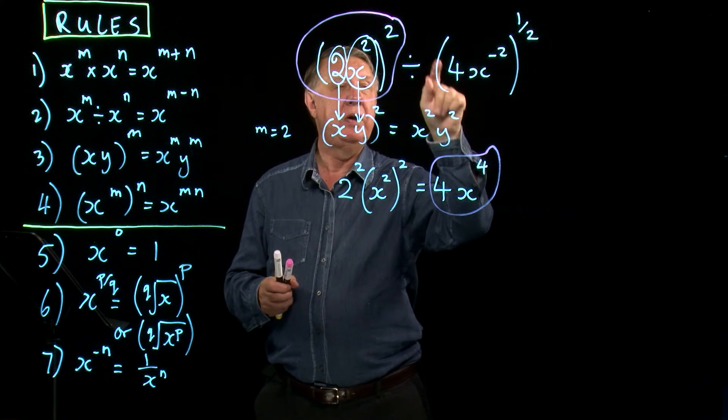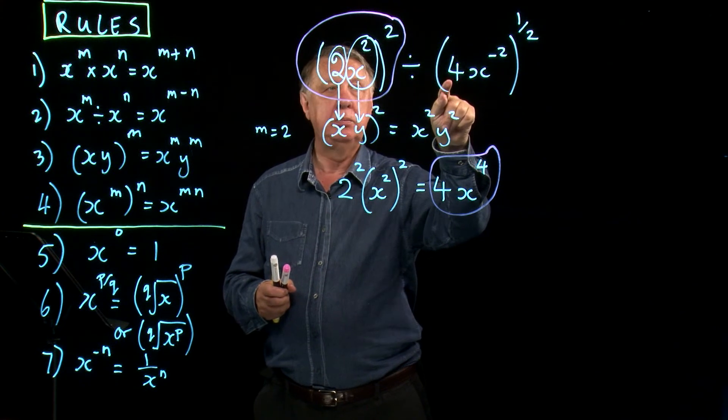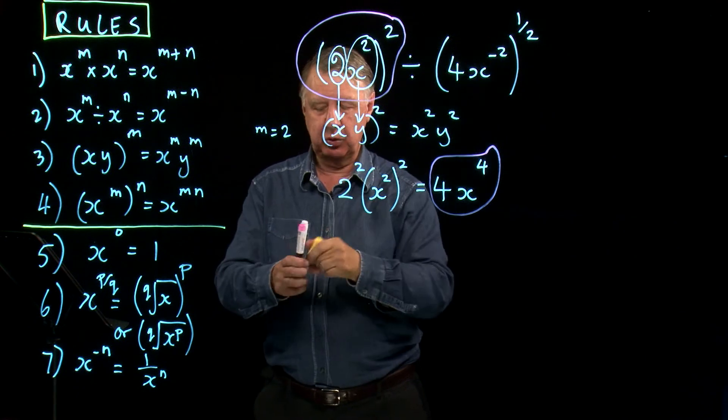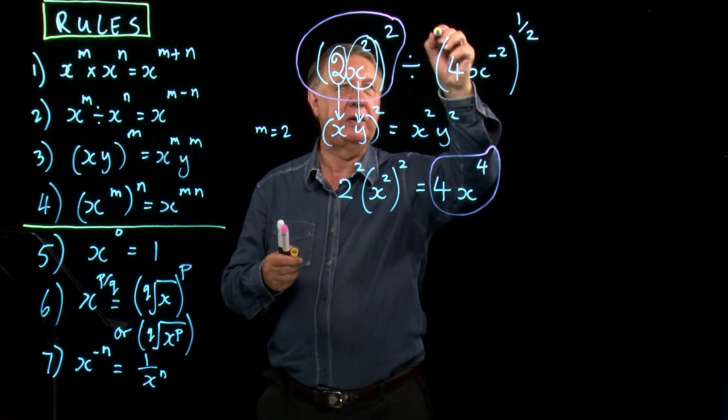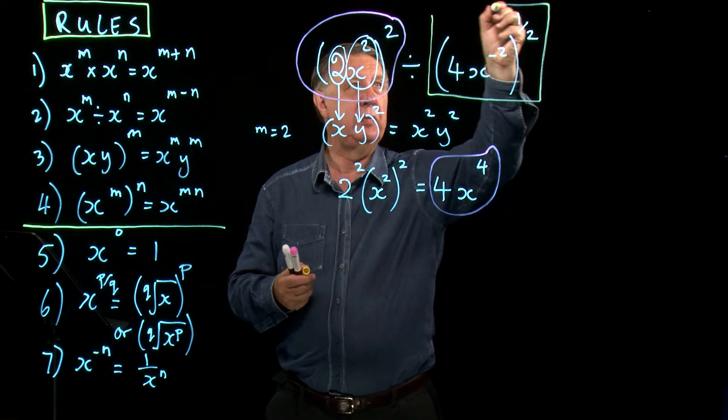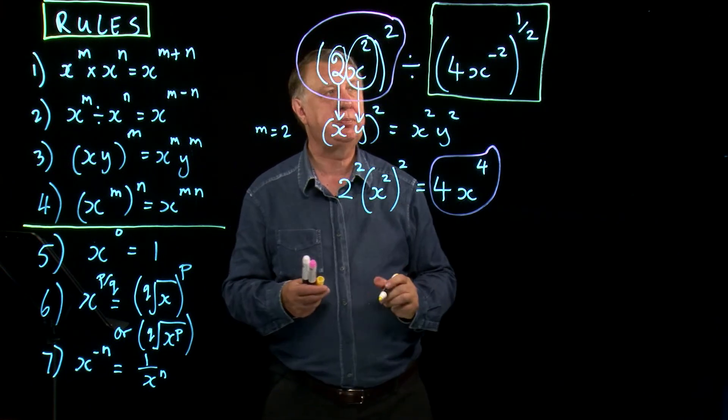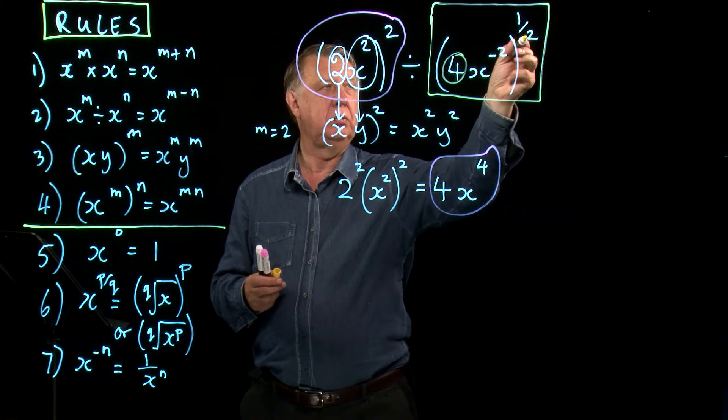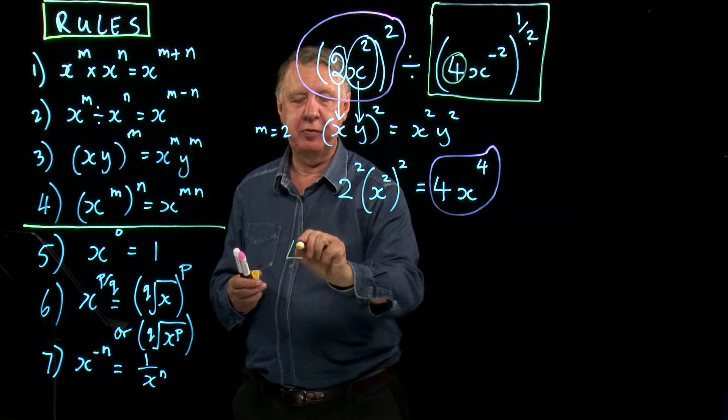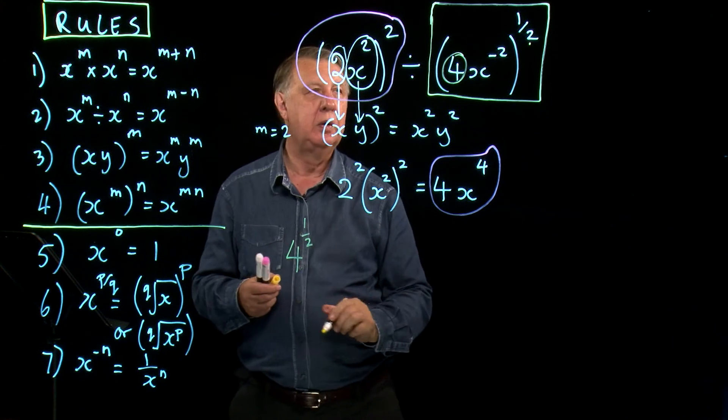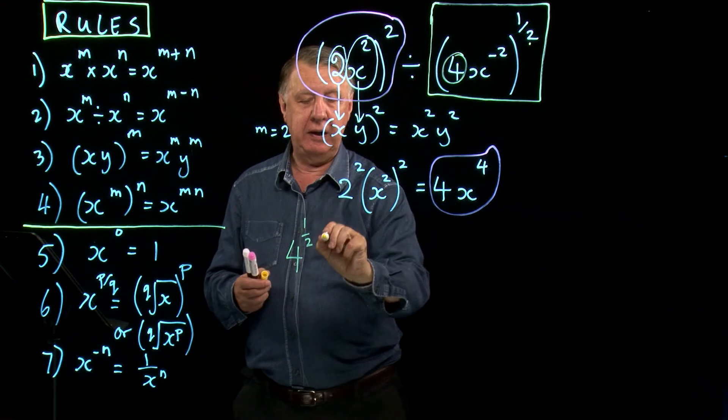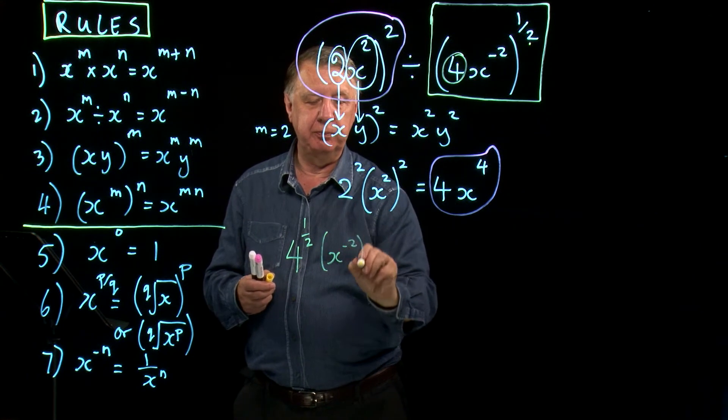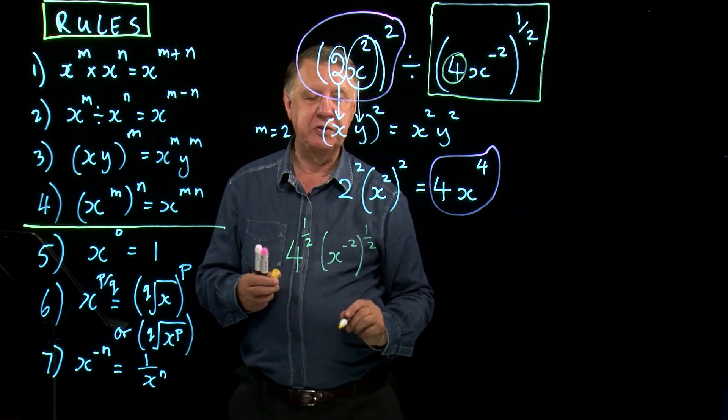So remember this time x is 4. So I have 4. Let's colour this and make it a bit clearer where we are. So we make this little chap here yellow. So we look at that first. 4 with the power of half. So we want 4 to the half, and then x to the negative 2 to the half.